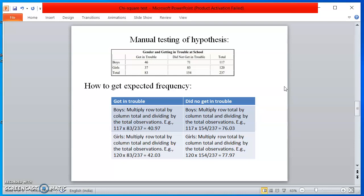Did not get in trouble for boys: multiply total row by column total and divide by the total observation. That did not get in trouble for boys, the total row is 117, and the total score for column is 154, divided by 237, equals 76.03. That is the expected score. Similarly for girls, we have 77.97 by following the same formula.